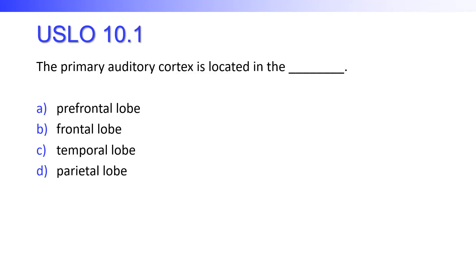The primary auditory cortex is located in the prefrontal lobe, the frontal lobe, the temporal lobe, or the parietal lobe? Hopefully you said the temporal lobe. It's really close to the ear — that one kind of makes sense.